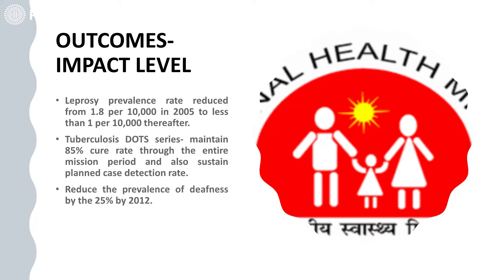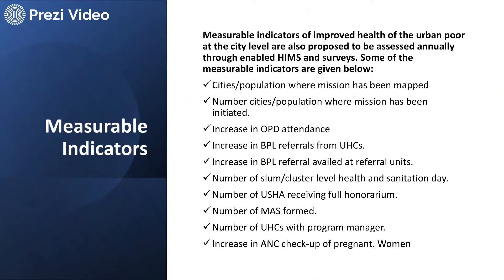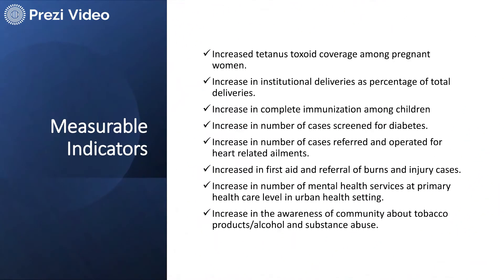Tuberculosis has been reduced and is highly controlled, and the prevalence of dengue is also being controlled. To measure the success of the program, we need to understand the below poverty line population and ensure accountability. Indicators include increased tetanus toxoid provided to pregnant women, institutional deliveries, increased immunizations for children, screening for diabetes and hypertension, creating awareness for controlled use of tobacco, and preventing alcohol overuse and substance abuse to improve overall healthcare.